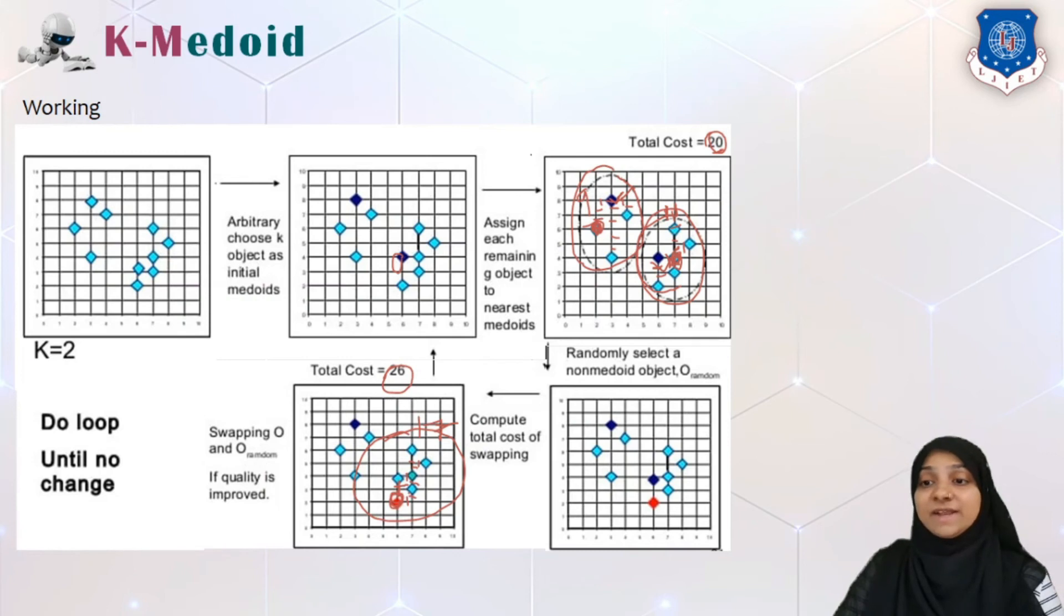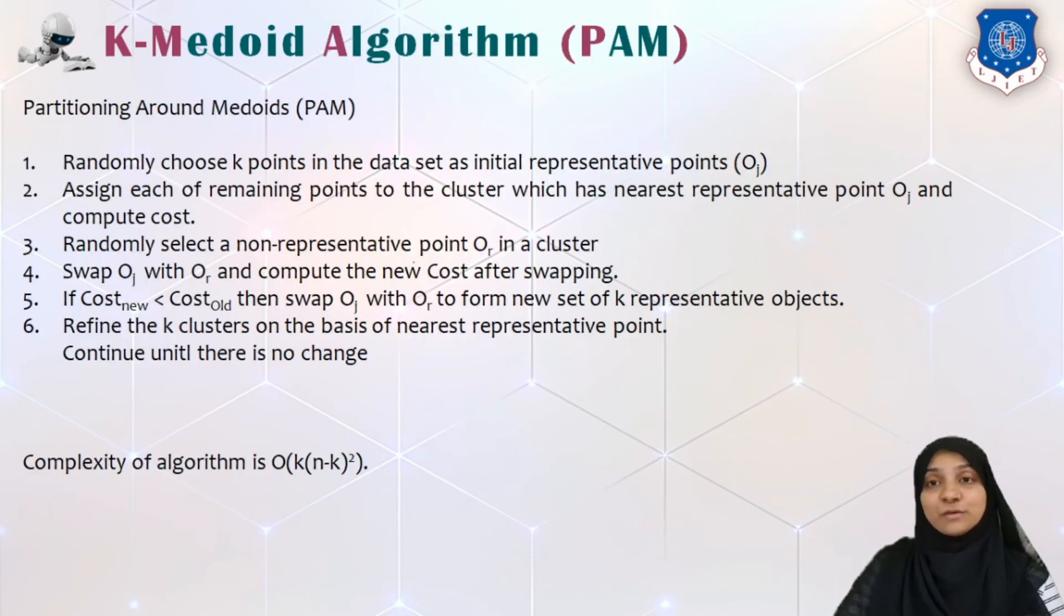Now in the another iteration, I can go with this cluster and choose some other particular point as medoid, or I can continue with the same cluster and choose some random another point and measure the distance. So this can continue unless and until there are no change in any representative medoid.